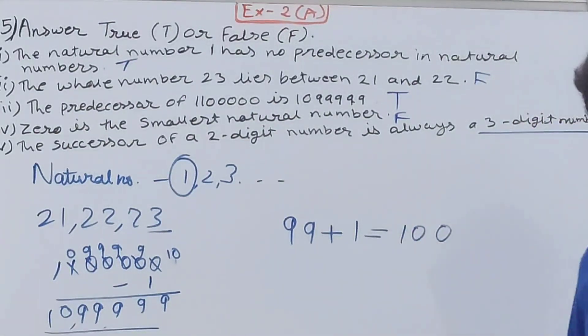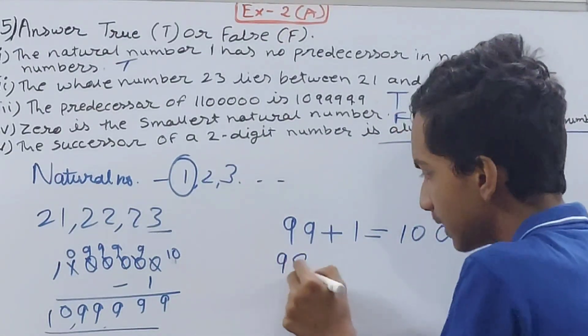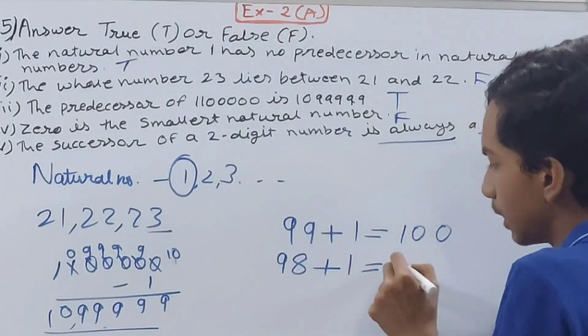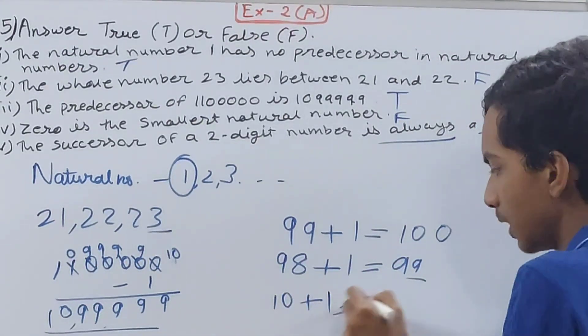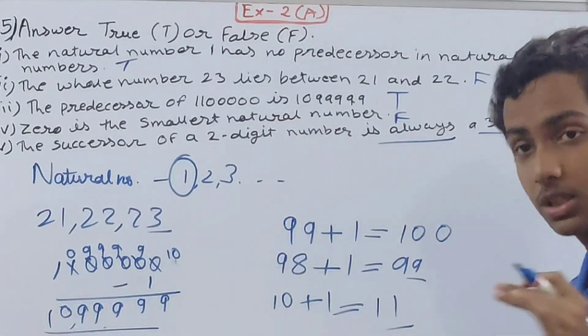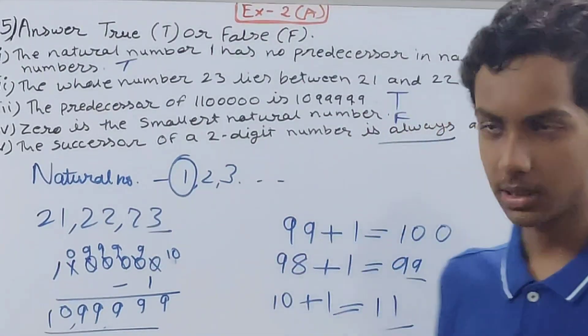But it is not always correct. Let's take one less than this, 98 plus 1 equals 99. This is two-digit. Let's take the smallest, 10 plus 1 equals 11. This is two-digit. And any other two-digit number you take, except 99, will give you a two-digit number as its successor. So this statement is false.